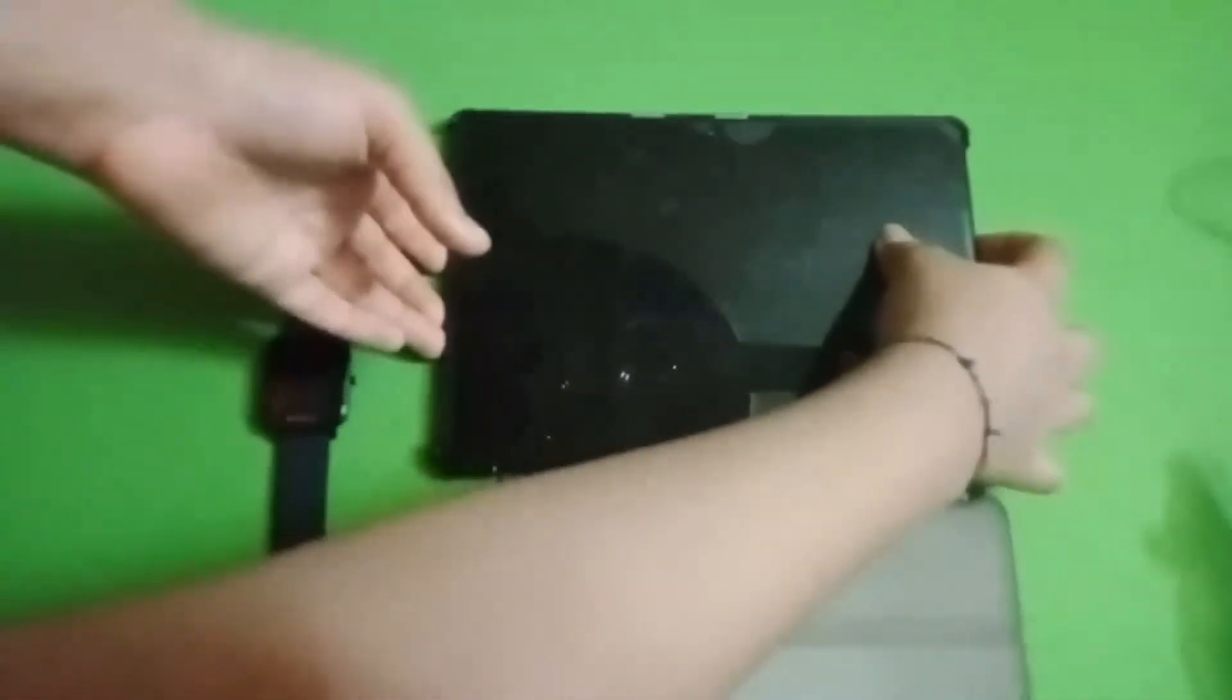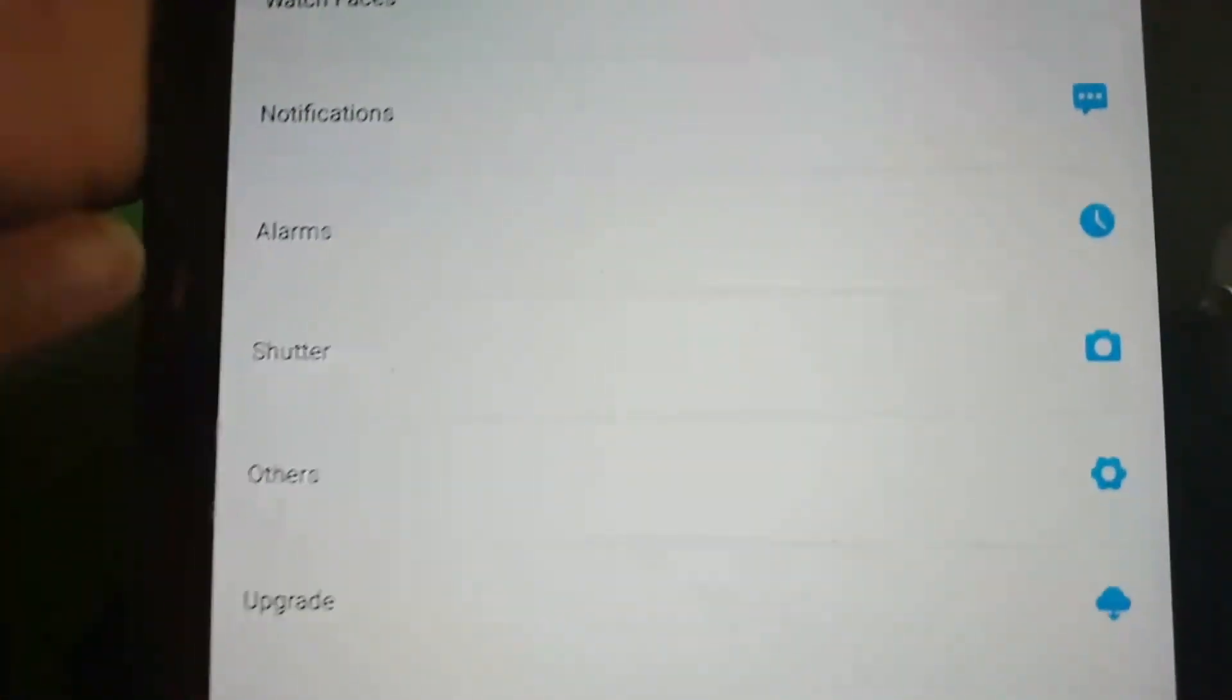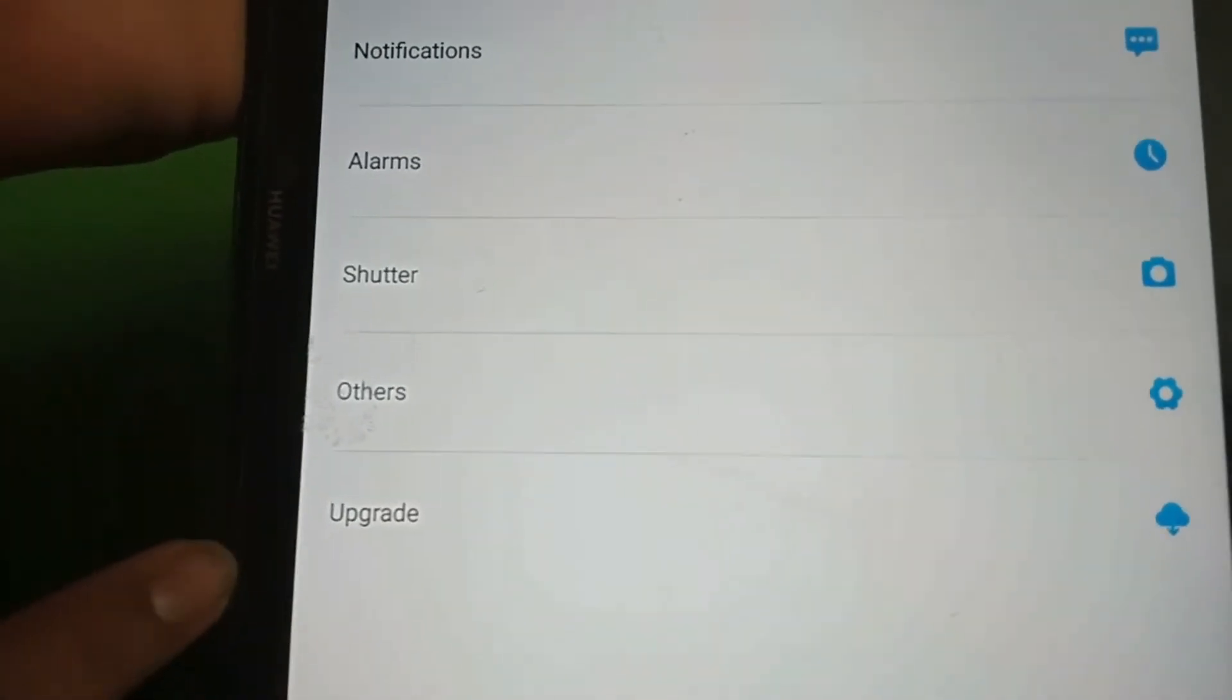So let's quickly pair it to my tab. You guys should download the app called Zepfit 20 series app. You can get it easily in Play Store, but it was not compatible with my tab, so I had to install an APK for it, but it works fine. So here is the app itself. In the app you have steps, sleeping, and heart rate, outdoor running. And in the other section we have watch faces, notifications, alarms, shutter, other, and upgrade.